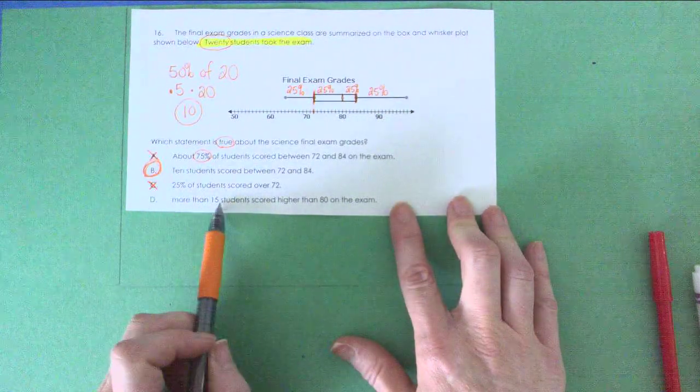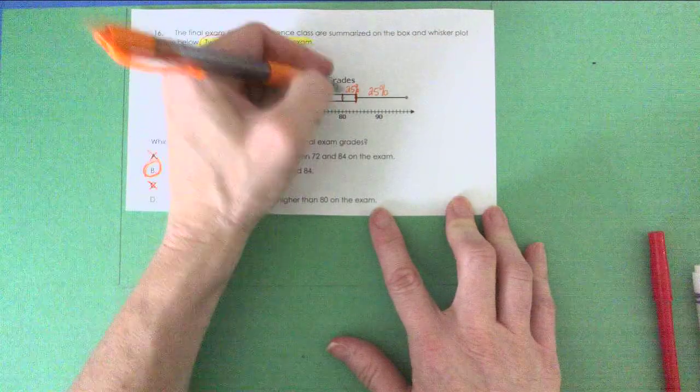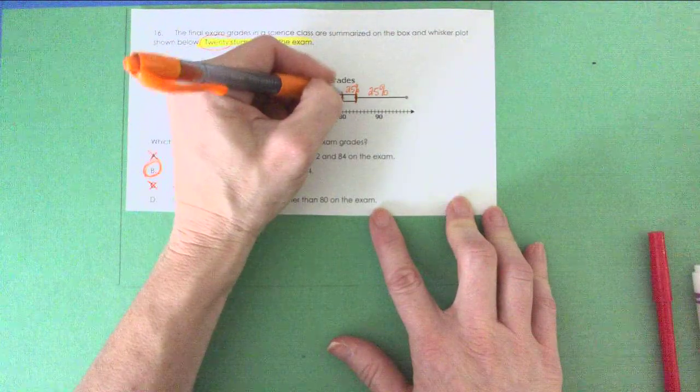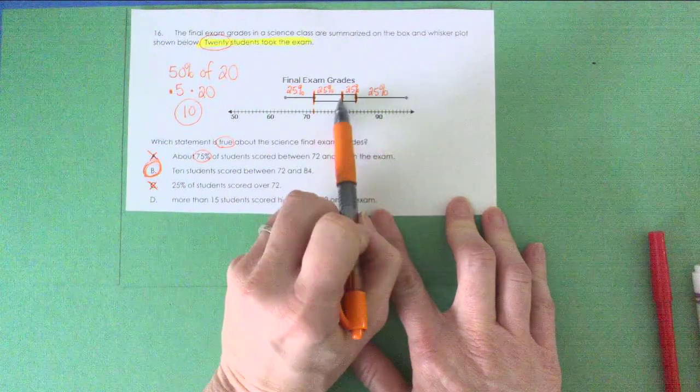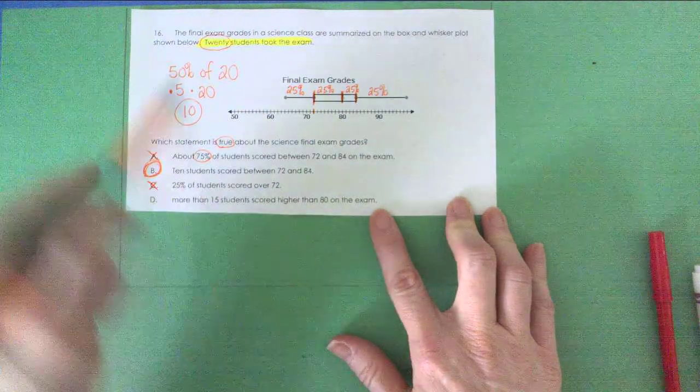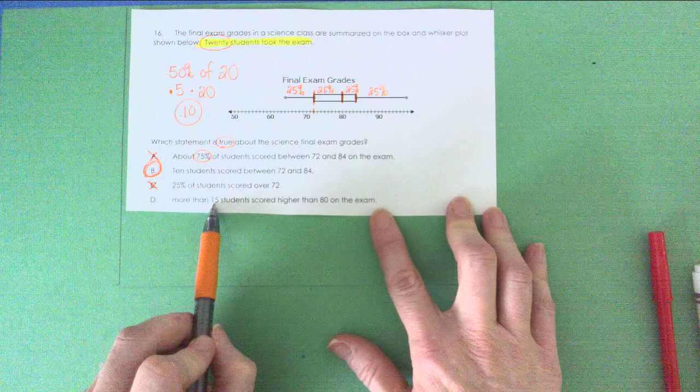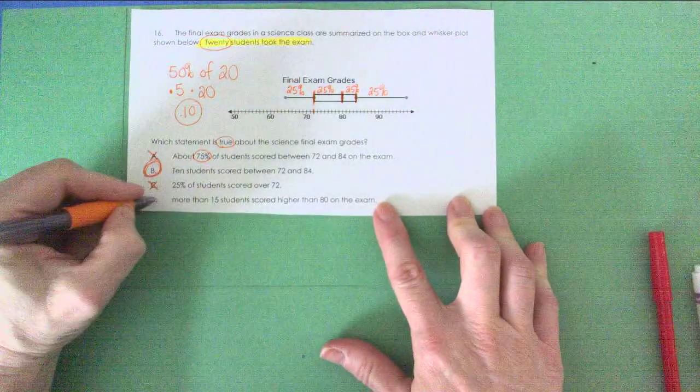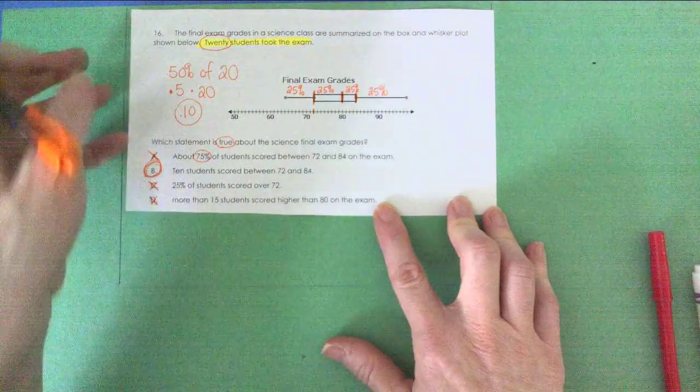And finally, letter D. More than 15 students scored higher than 80. Let's find 80. 80 is right here, the median. 50% of students scored higher than 80. We already know that 50% is 10 students, not 15 students. So I'm going to throw out D as well. I'm just going to go ahead and go with B.